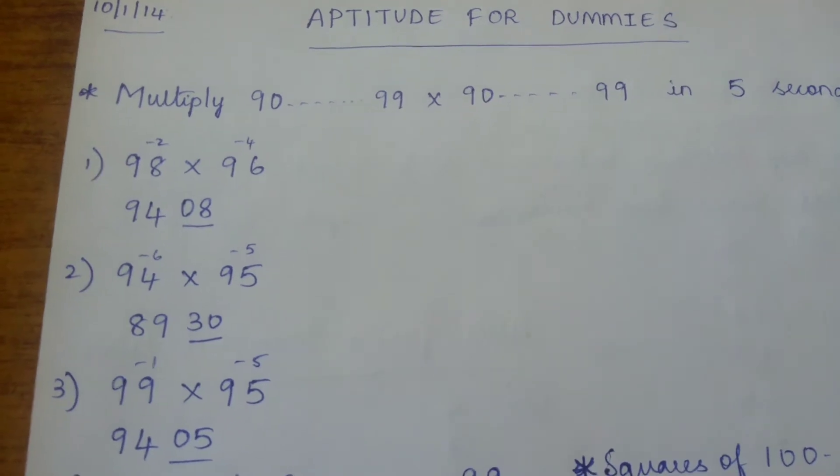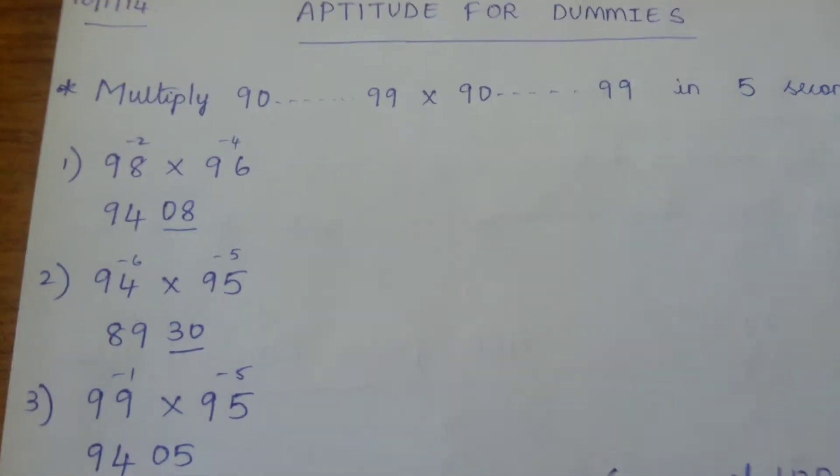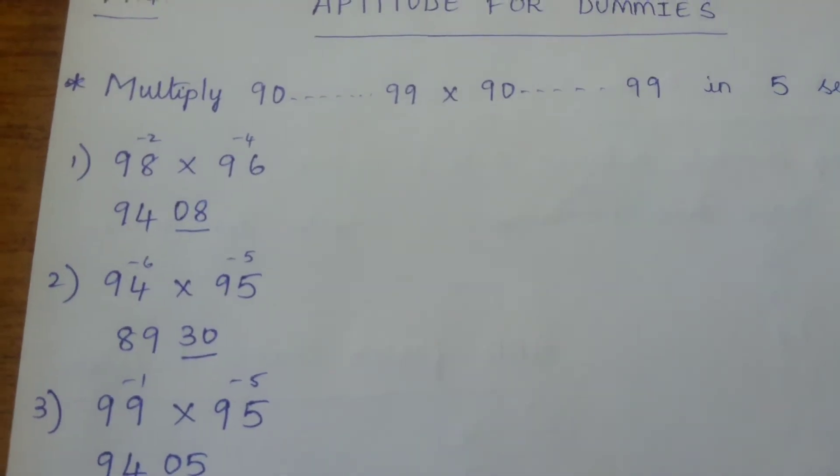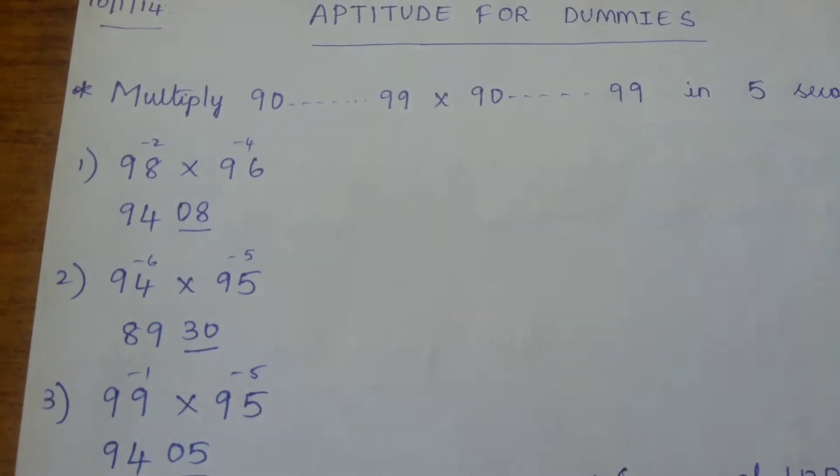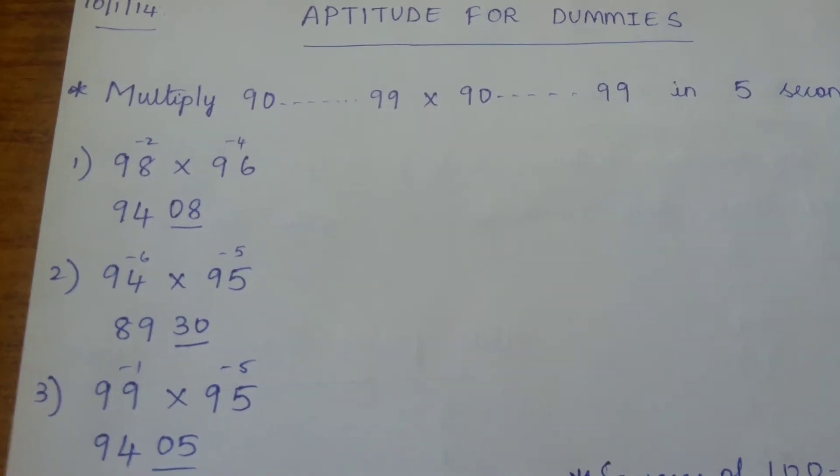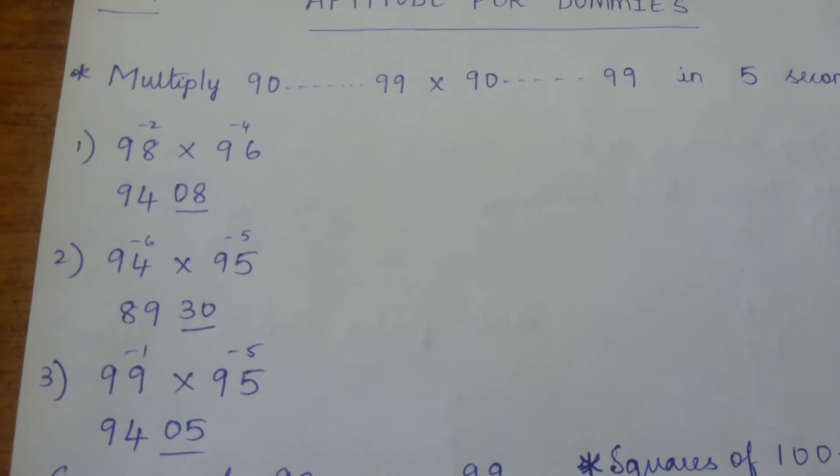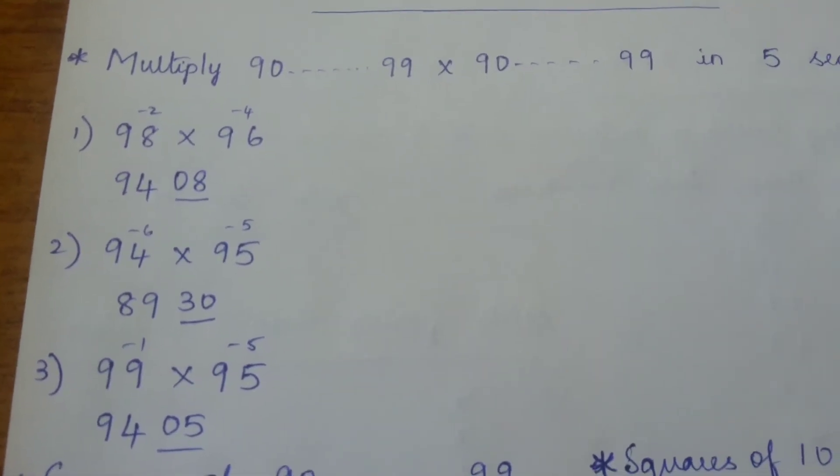Now you can subtract either of the differences. Subtract 4 from 98, which is 94, or subtract 2 from 96, which is 94.